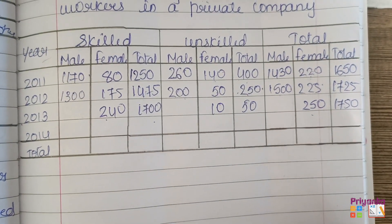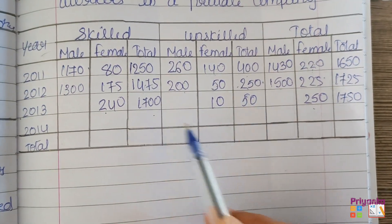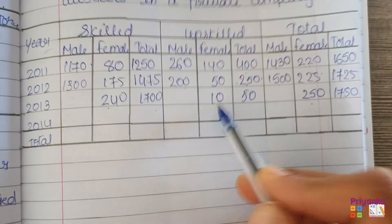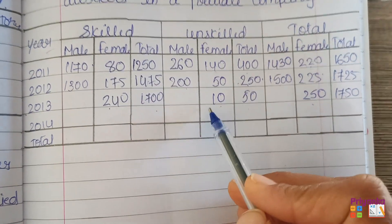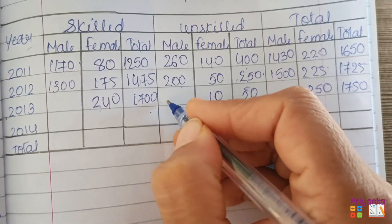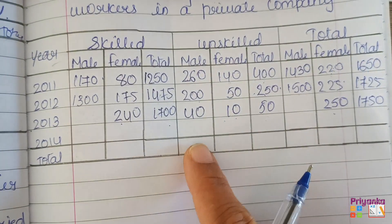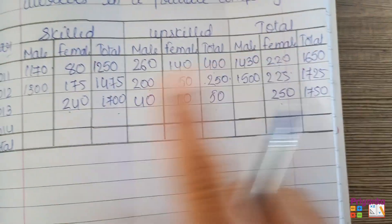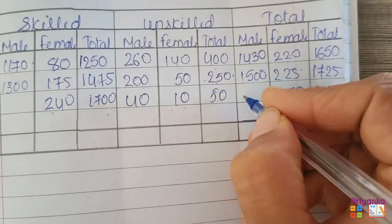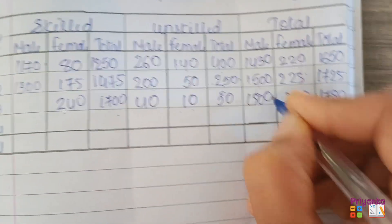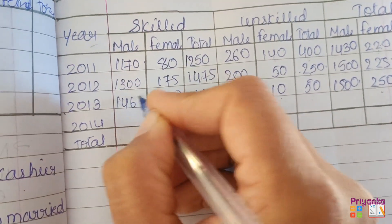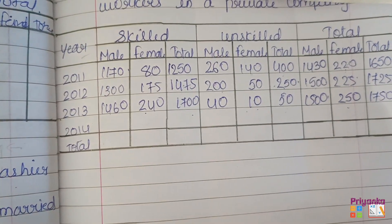Out of this information, we can easily find the number of males. That is 50 minus 10 — total unskilled minus 10 females — giving us 40 male unskilled workers. For the remaining columns, skilled males come to 1500 and skilled females give 1460.